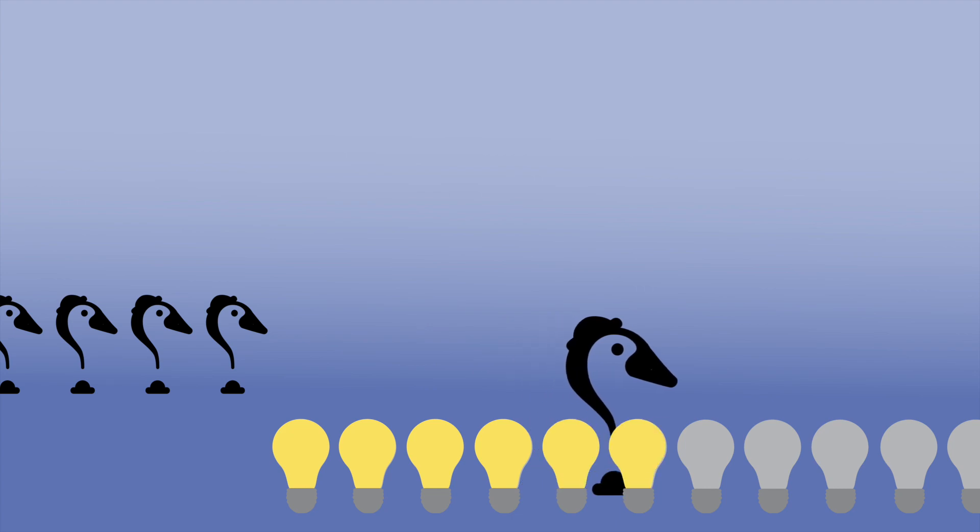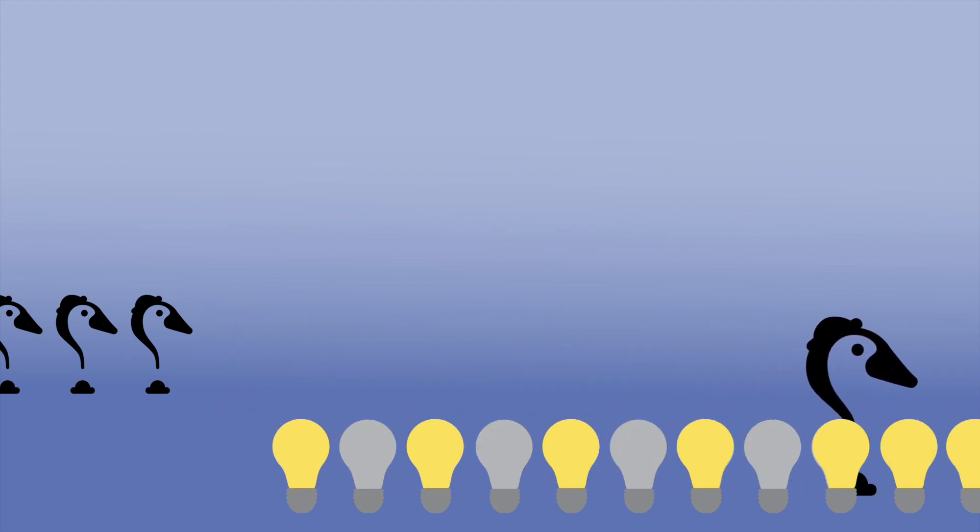100 players line up in front of 100 light bulbs, all of which start off. The first player goes through and switches on every bulb. The second player flips every second light, starting with number 2.